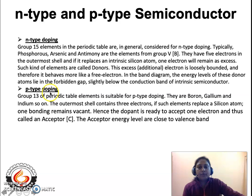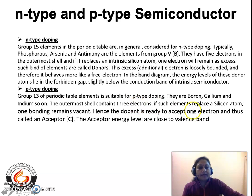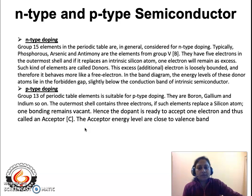For p-type doping, group 13 elements such as boron, aluminum, gallium, and indium are used. These elements have 3 valence electrons, so the 3 valence electrons of the group 13 element bind with 4 valence electrons of silicon, leaving one bonding vacant — this is called a hole. The hole is responsible for improving the conducting properties of such materials.